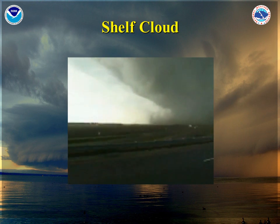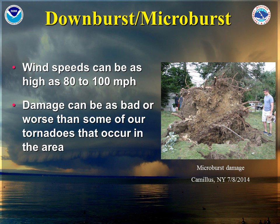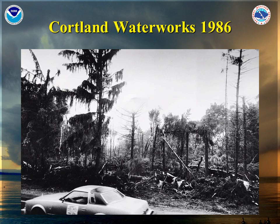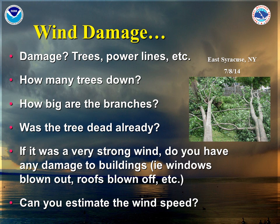Winds of this magnitude are often mistaken as tornadic. A downburst, or microburst, can produce wind speeds as high as 80 to 100 miles per hour. The damage can be as bad or worse than some of the tornadoes which tend to occur in New York and Pennsylvania. Take a look at the picture showing microburst damage from Camillus, New York in July of 2014. Another example is the very strong microburst which hit the Cortland, New York waterworks in 1986. If you experience wind damage in your area, please be as specific as possible about the type of damage observed. For instance, are trees or power lines down? How many trees are down? Was the tree already dead? If it was a very strong wind, is there any damage to buildings — are windows blown out or roofs blown off? Can you estimate the wind speeds?